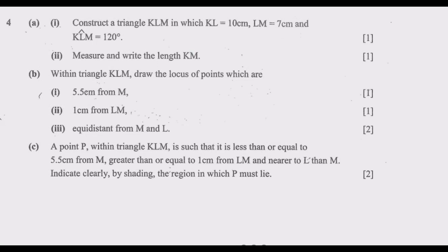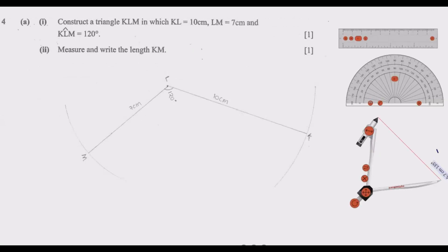Let us start with question A. To answer question A, you need three things: a ruler, a protractor, and a compass. Looking at the triangle KLM, we have KL = 10 cm, LM = 7 cm, and angle KLM = 120 degrees.